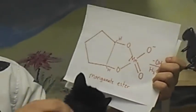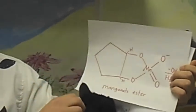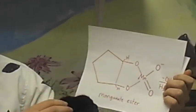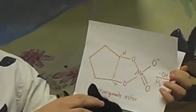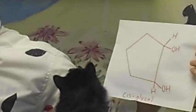Second is the transition state. A manganate ester is formed with the electrons that were once in the double bond now creating a bond between the oxygens. We will now add water, which will give us the final product of the cyclopentadiol.